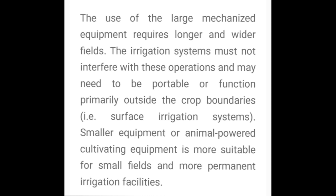Portable irrigation systems functioning primarily outside crop boundaries — such irrigation systems with smaller equipment and animal-powered cultivating equipment — are more suitable for small fields, whereas permanent irrigation facilities suit larger setups.